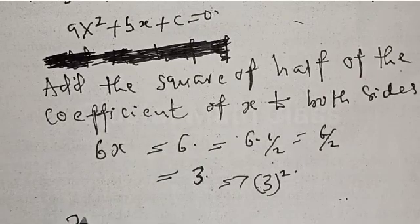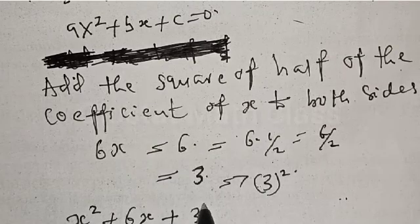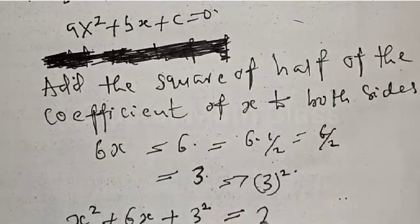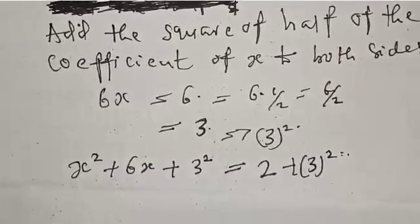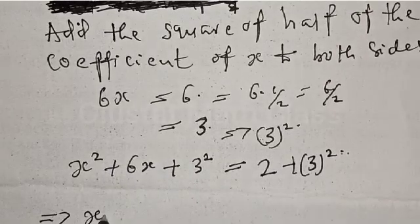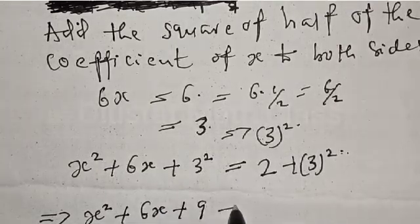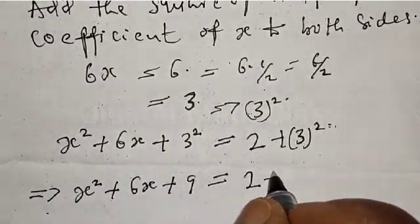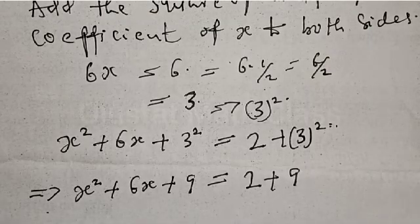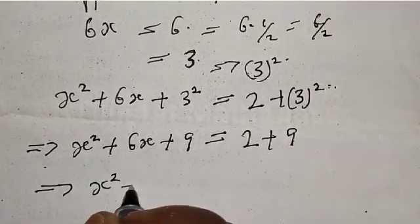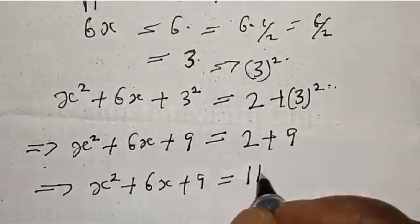We have x squared plus 6x, then plus 3 squared is equal to 2 plus 3 squared. This implies that x squared plus 6x plus 9 is equal to 2 plus 9, that is 11.